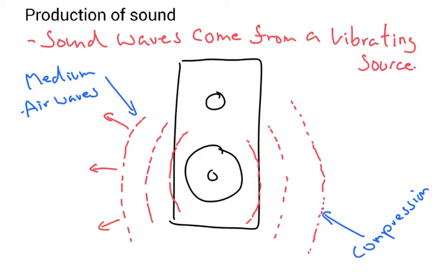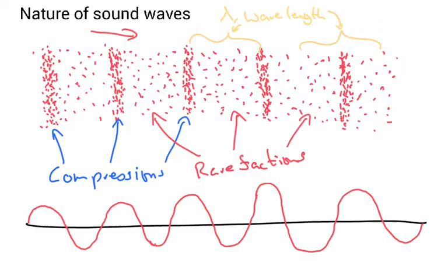If you could see the individual particles as the sound leaves the speaker, you'd see there's an area of compression. Each one of these little dots represents an air particle, and the compression waves move forward. Here you can see where the sound waves are compressed, so the particles in the air come together.